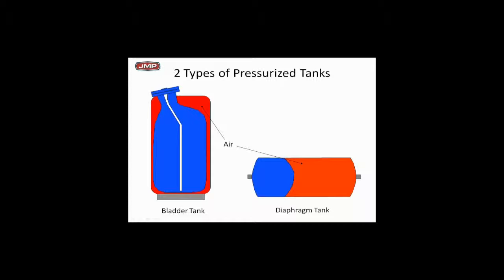There are two types of pressurized tanks. The bladder tank has air in the bladder and it's pressurized — the bladder can be taken out and replaced. The diaphragm tank is a throwaway; you cannot replace the diaphragm. That's the difference between the bladder and the diaphragm — it's about that simple. We ship them from the factory at 12 pounds. Remember, you're going to have to pre-charge these tanks on the job site to the makeup pressure at that elevation to make sure when you start off, they're 100% full of air.